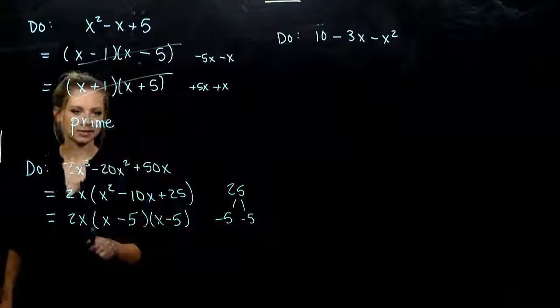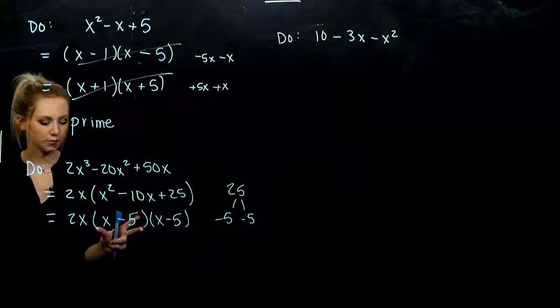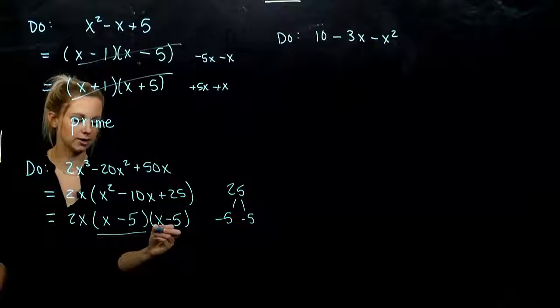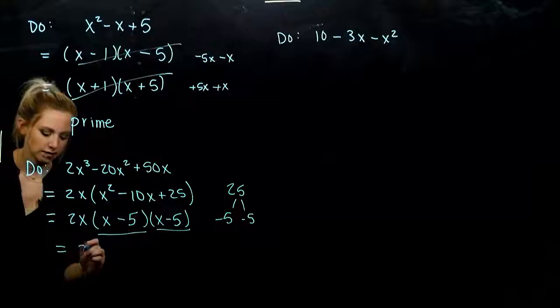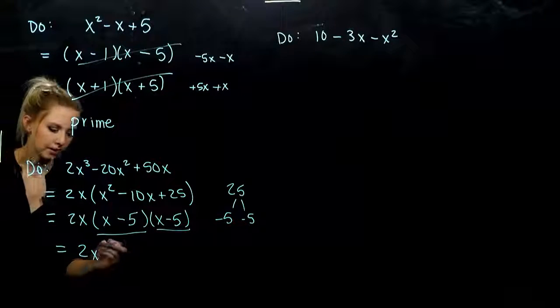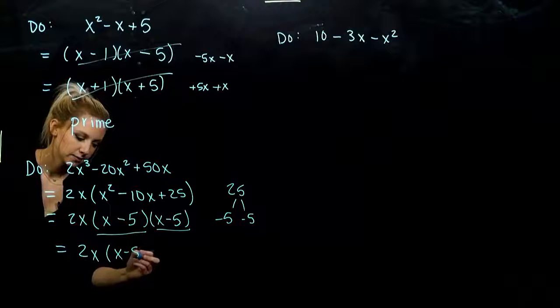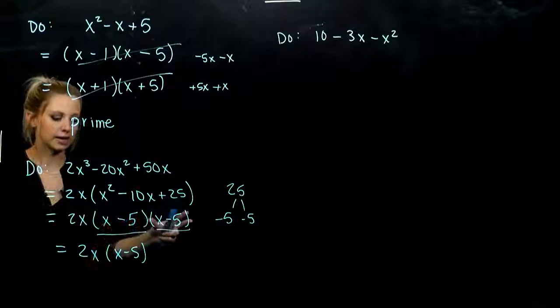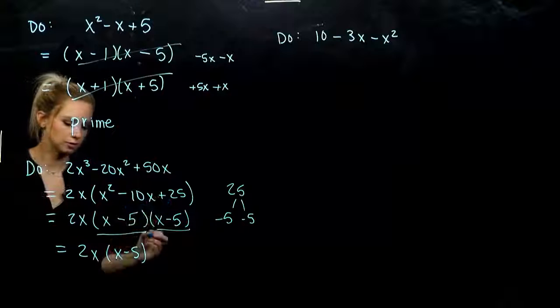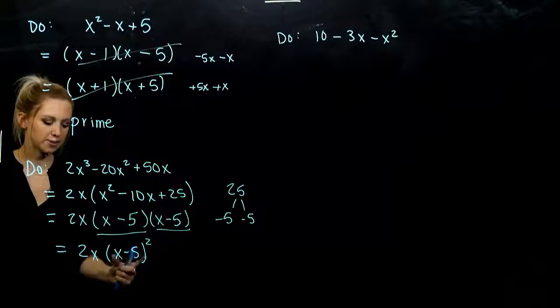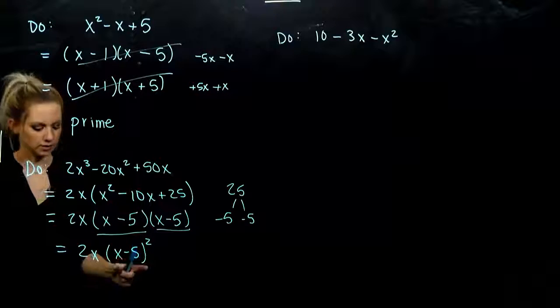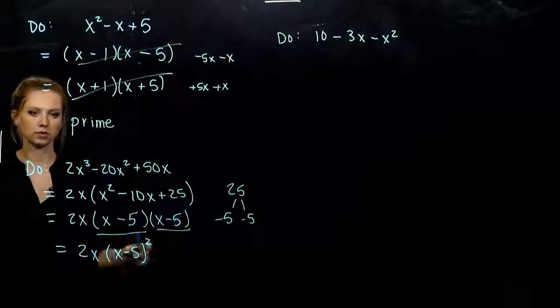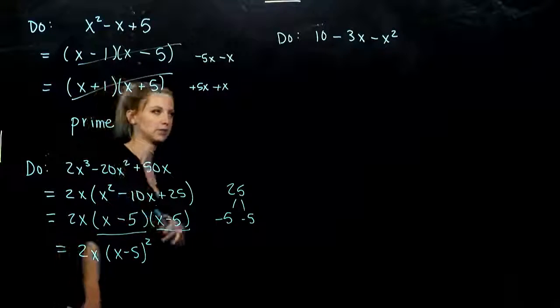And we can rewrite this in another way. I've got two factors that match exactly here. So how do we concisely write that? We still have our greatest common factor on the outside. But x minus 5, how many factors of that do I have all together? Two. So we could write it as x minus 5, that quantity, squared. Because that's telling me this times itself, two times in total.